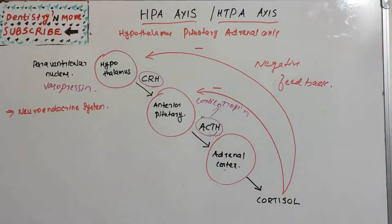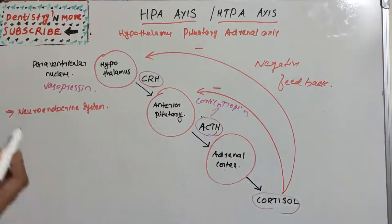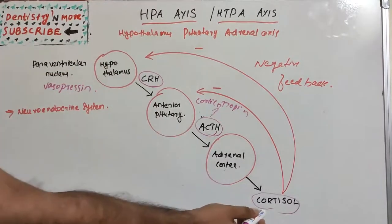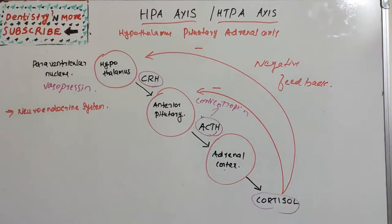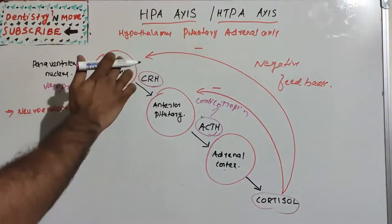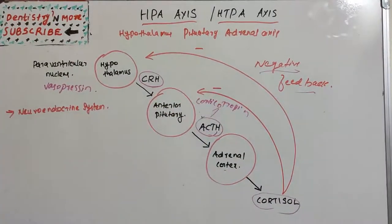The adrenal cortex produces glucocorticoids and mineralocorticoids. The glucocorticoid cortisol is the basic hormone for the stress response. Sometimes this cortisol will act on the anterior pituitary and hypothalamus as a negative feedback, meaning when there is excess cortisol, it signals back to reduce further production.